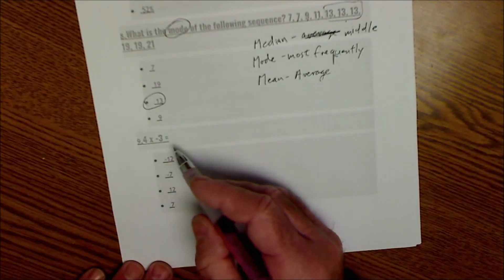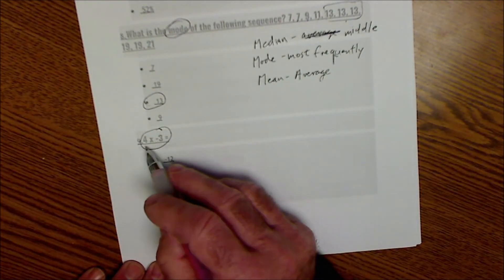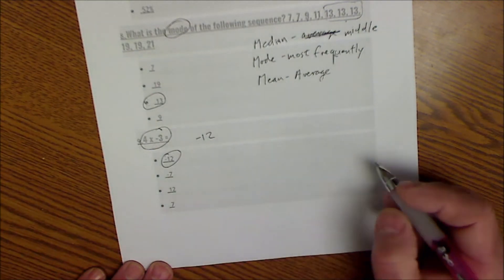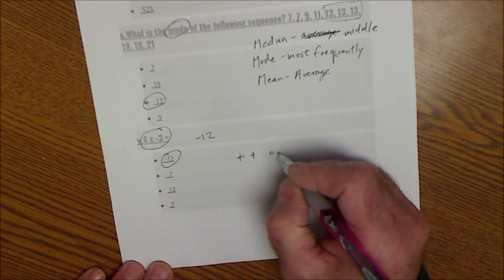This is also positive, negative. I have a positive times a negative, which is a negative. So that's negative 12. That's the answer. Positive times a positive is positive.